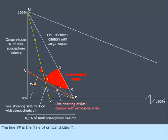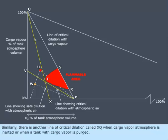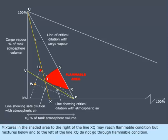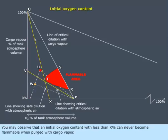The line VP is the line of critical dilution. However, you can move from mixtures such as at point U to another, such as at point W, by adding inert gas. Similarly, there is another line of critical dilution called XQ, when cargo vapor atmosphere is inerted or when a tank with cargo vapor is purged. Mixtures in the shaded area to the right of line XQ may reach flammable condition, but mixtures below and to the left of line XQ do not go through flammable condition. An initial oxygen content with less than X percent can never become flammable when purged with cargo vapor.